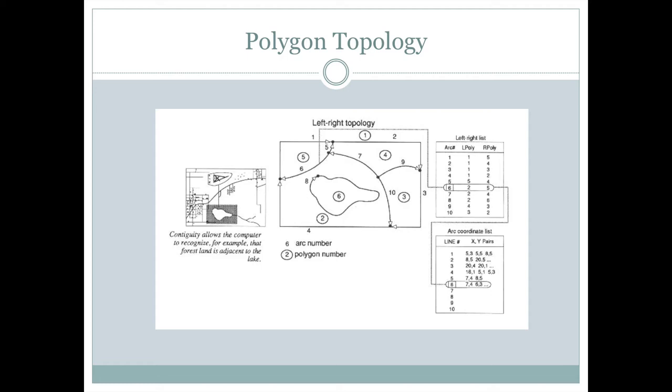Polygon topology is a little more complicated. Polygon topology for each line that makes up a polygon layer, such as this line six here, not only does it have a from node and a to node, but it also understands what polygons are on either side of it.